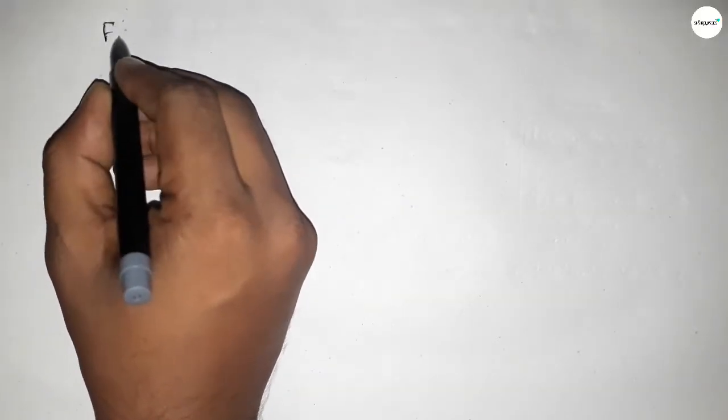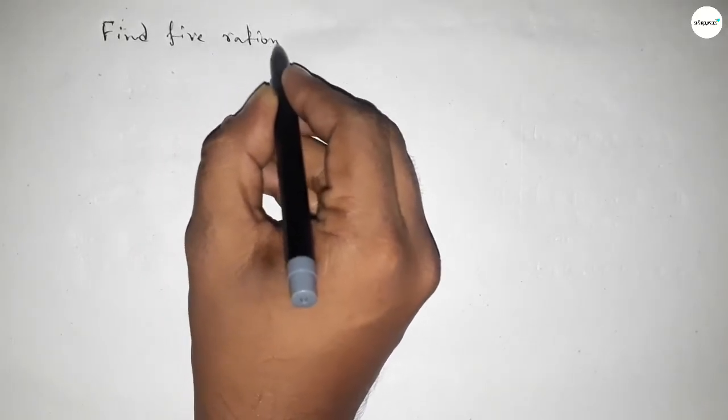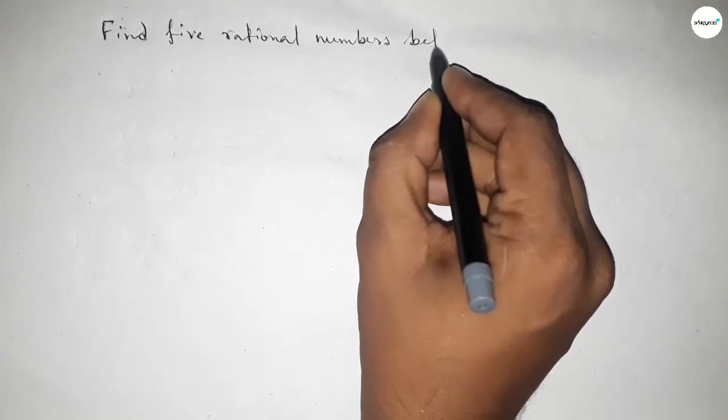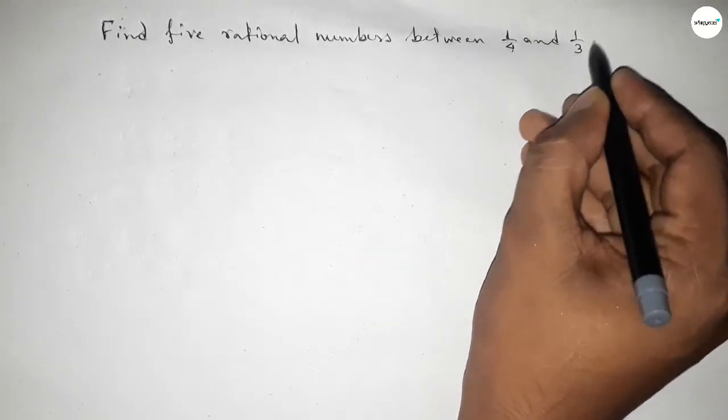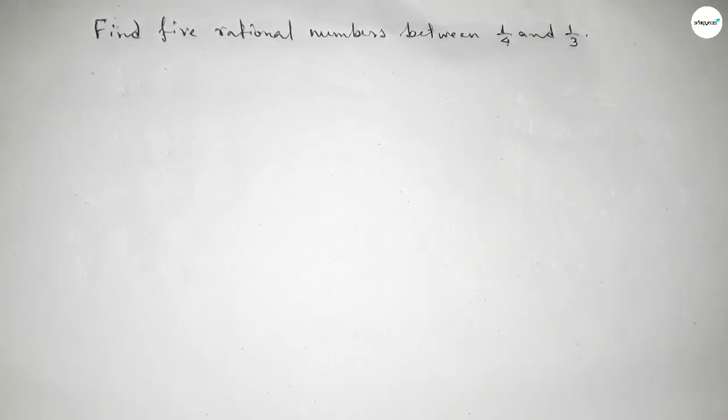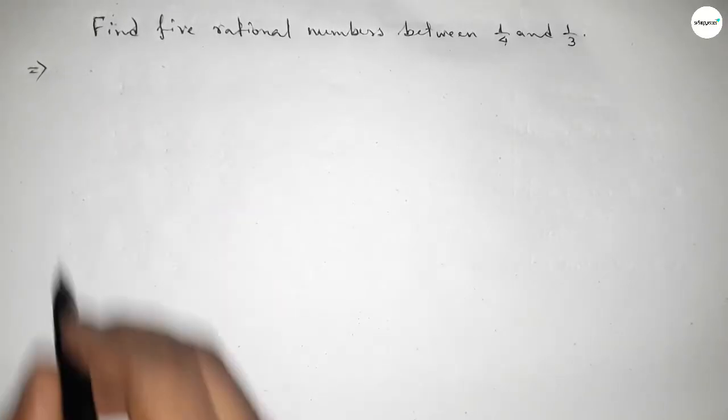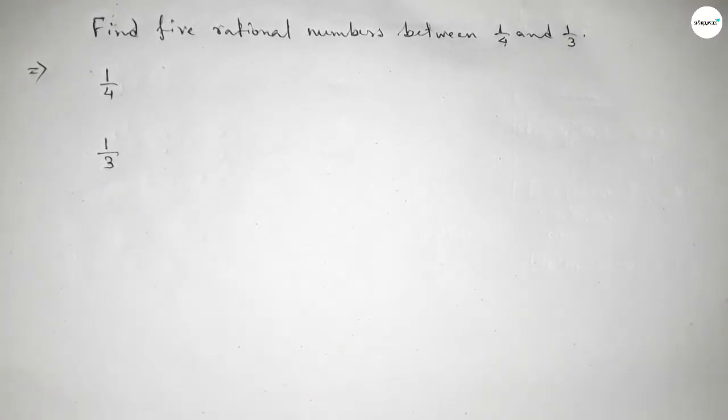Hi everyone, welcome to a sister classes. Today in this video we have to find five rational numbers between one over four and one over three. Let's start. First of all, write down here the given numbers: one over four and one over three.